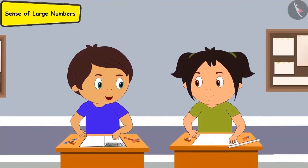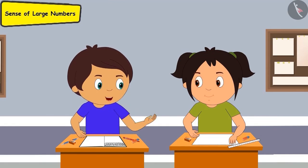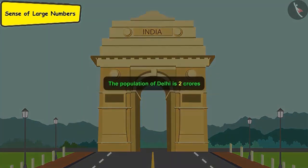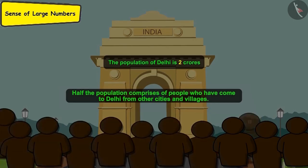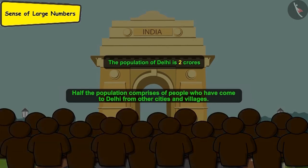Didi, see what has come in today's newspaper. What is it Sonu? It says that India's capital Delhi has now reached a population of two crores. In addition, it's written half of Delhi's population comprises of people who have come down to the city and settle here in search of better jobs. This is the biggest reason behind Delhi being so populated.